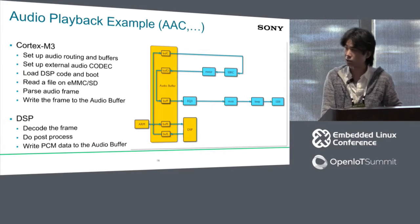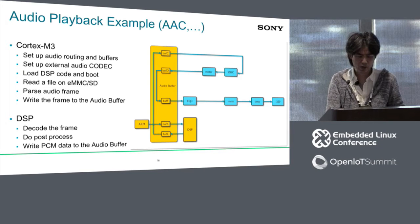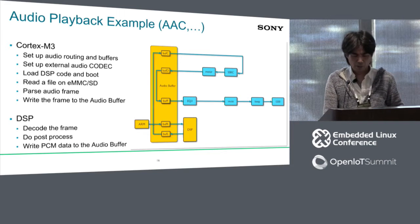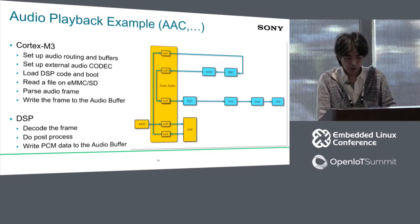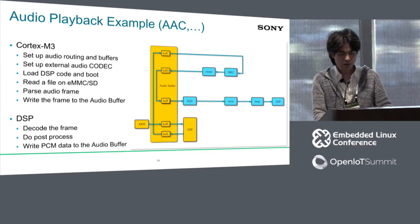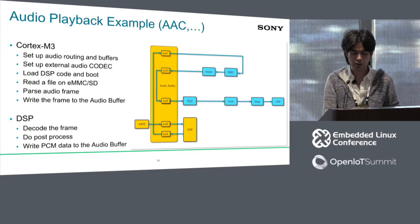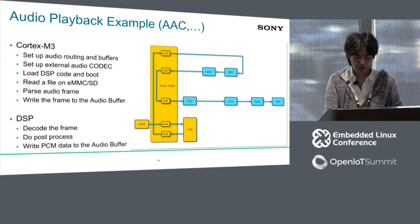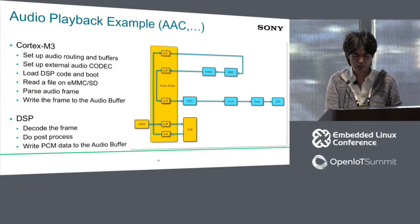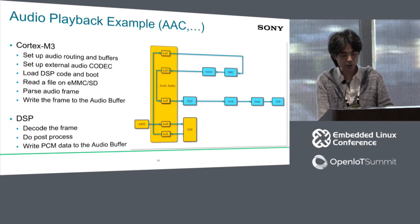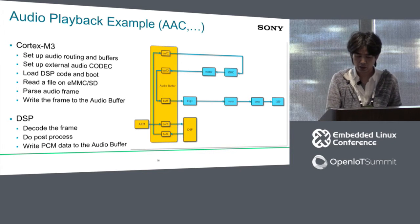This is an audio playback example using DSP. First, the CPU sets up audio blocks inside the microcontroller and sets up the external audio codec. Then it boots the DSP. Then CPU reads the audio file from storage and audio data is sent to the DSP through the audio buffer. Then the DSP decodes the audio frame, and finally PCM data is output to I2S0. Of course actual playback is a little more complex — for example, in MP3 playback the MP3 hardware decoder is actually used.